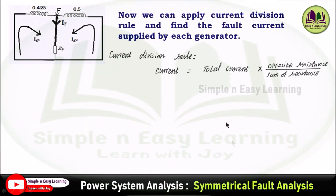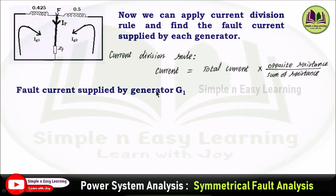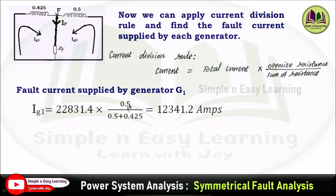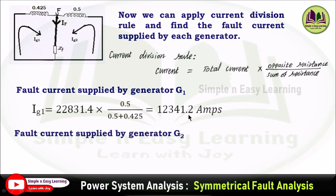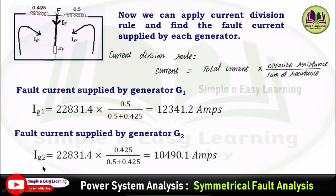Applying the current division rule — current = total current × (opposite impedance) / (sum of impedances). For generator 1, the opposite impedance is 0.5, so IG1 = total current × 0.5 / (0.5 + 0.425) = 12341.2 A. For generator 2, the opposite impedance is 0.425, so IG2 = total current × 0.425 / (0.5 + 0.425) = 10490.1 A. These are the fault currents supplied by each generator.